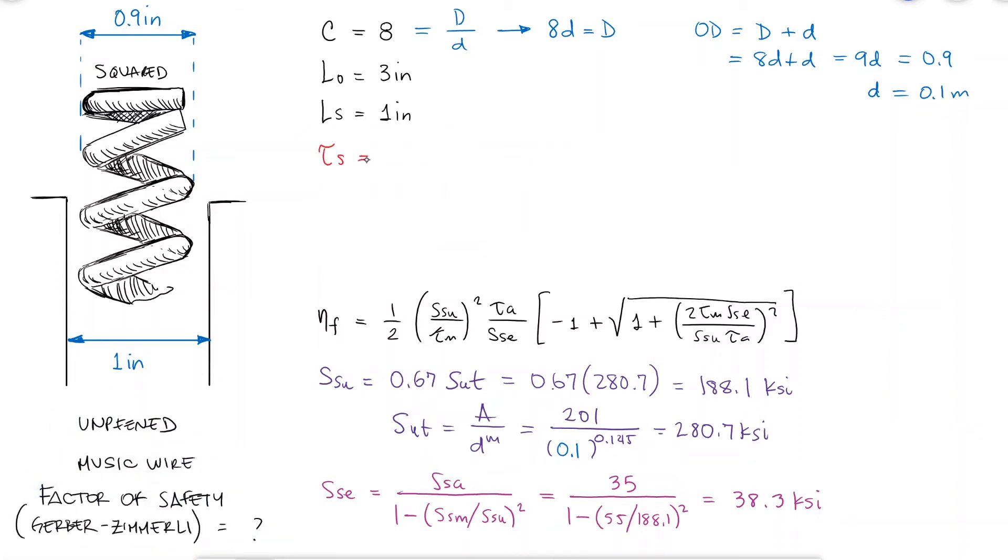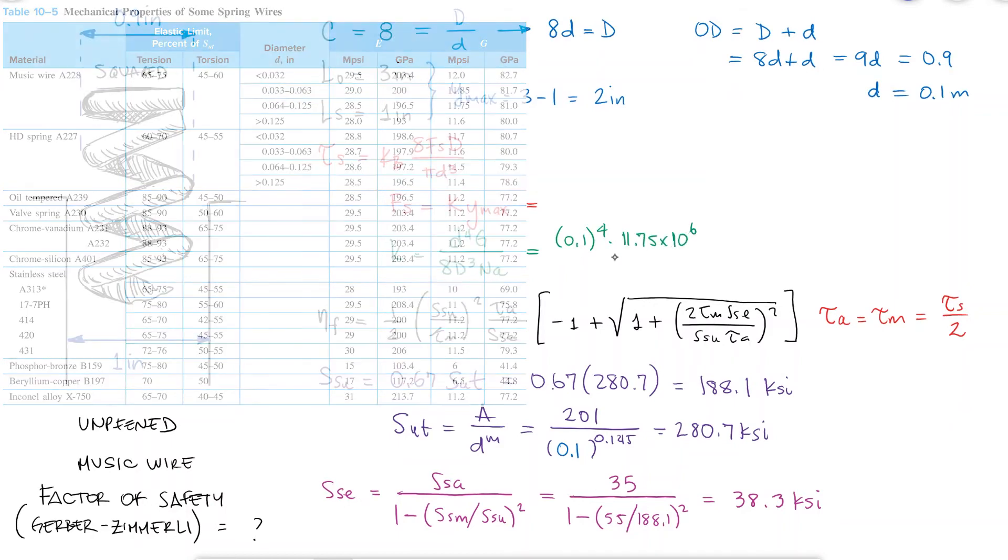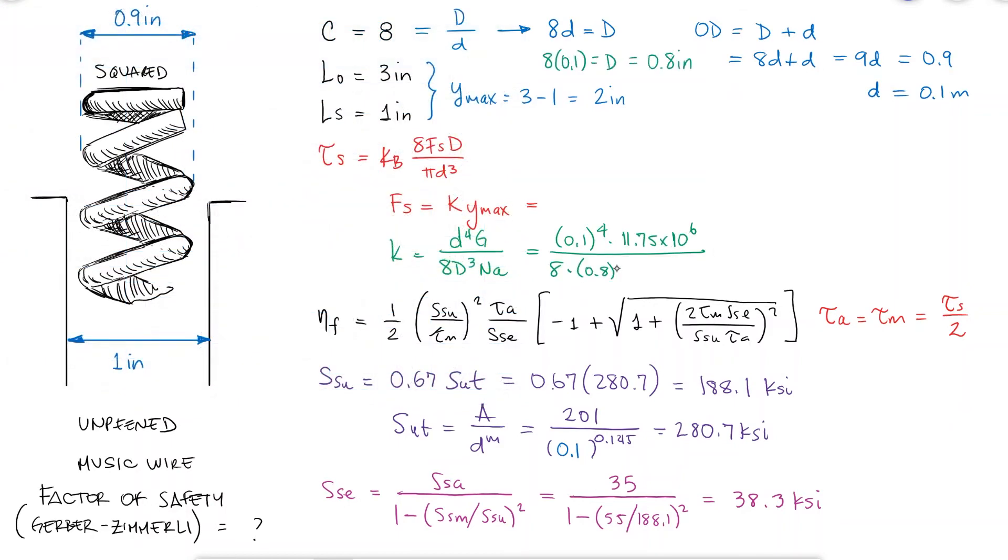Moving on to the maximum shearing stress, so that we can find the alternating and the mean shearing stress, we find that the force that is causing that maximum shearing stress is equal to the spring constant times the maximum deflection. We have the wire diameter, and we can find the shear modulus for music wire that has a diameter between 64 and 125 thousandths of an inch, the coil diameter, and the number of active coils, if we find the total number of coils first.